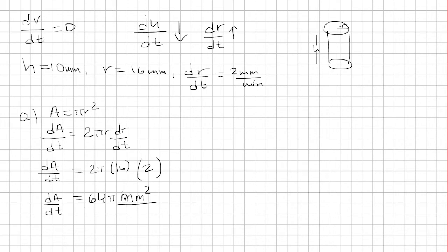And because it's the derivative, we're going to use minutes. So the derivative of the area with respect to time is 64π millimeters squared per minute.